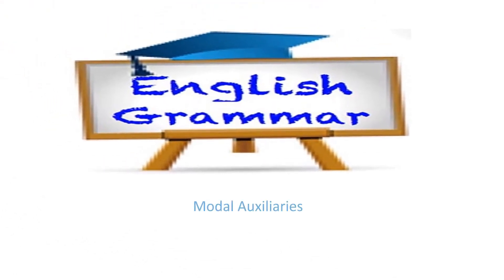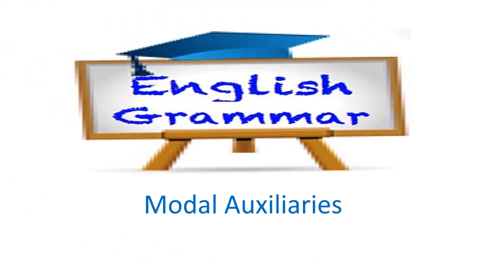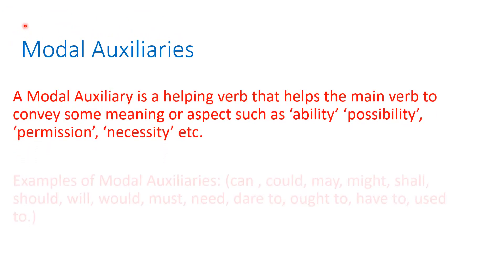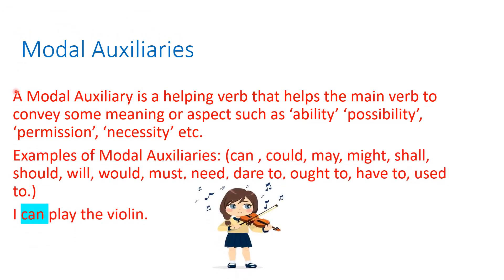English Grammar: Modal Auxiliaries. What are modal auxiliaries? A modal auxiliary is a helping verb that helps the main verb to convey some meaning or aspects such as ability, possibility, permission, necessity, etc. Examples of modal auxiliaries: can,